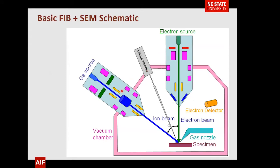Here's a schematic of our instrument — many instruments are very similar. You have an electron column here for the SEM. At a specific angle, in our case 52 degrees, you have a gallium source which is your ion source. The 52 degree angle enables you to be cutting the sample and then, without moving the sample, take a secondary electron image with the SEM. You also have a lift-out needle, gas nozzle, electron deflector, and detector.